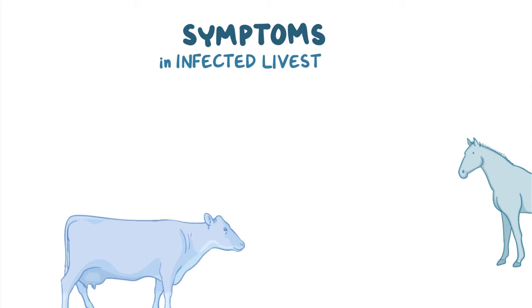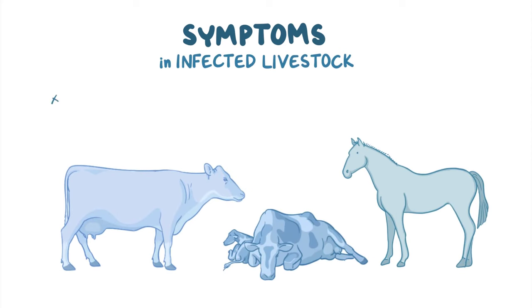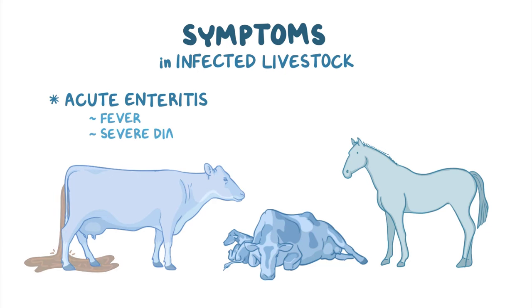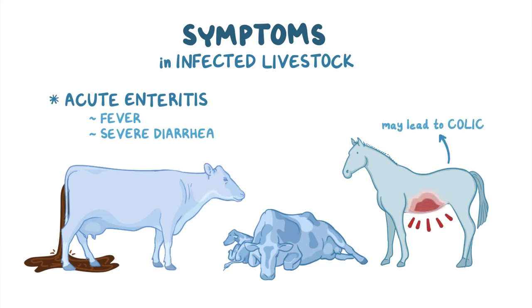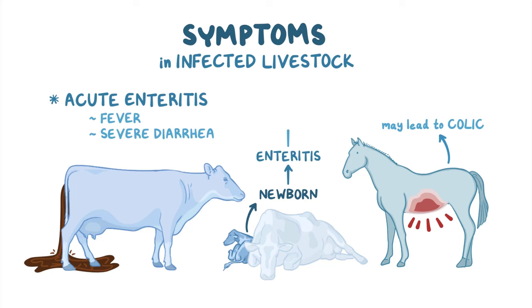In infected livestock, most adults have acute enteritis, with fever and severe diarrhea. In horses, abdominal pain may lead to colic. In newborn animals, enteritis is often followed by bacteremia.